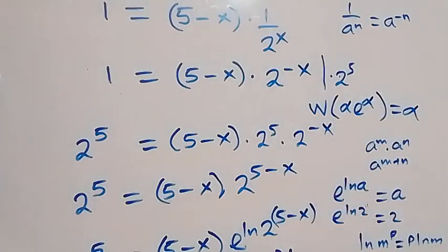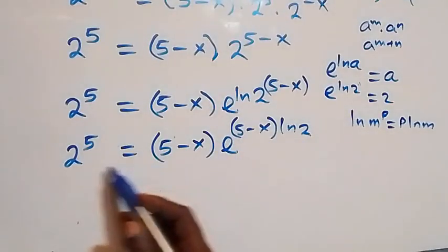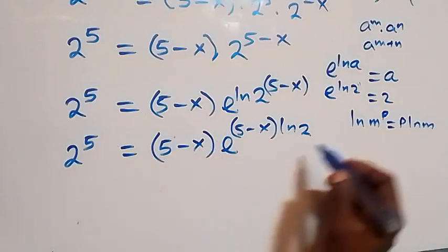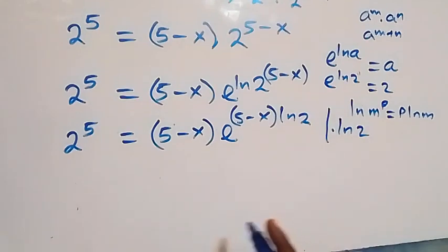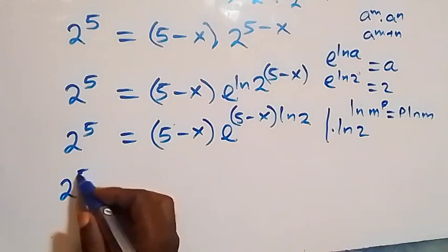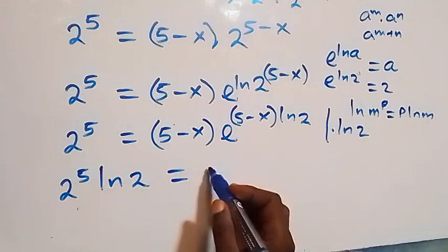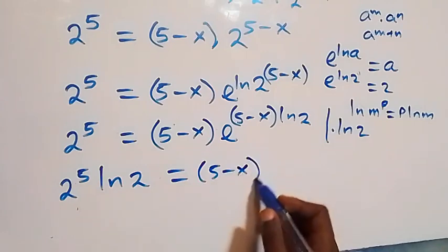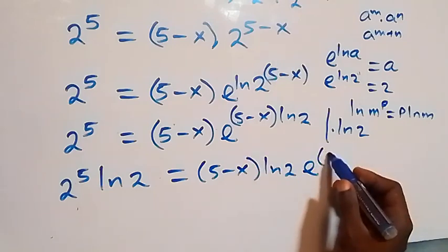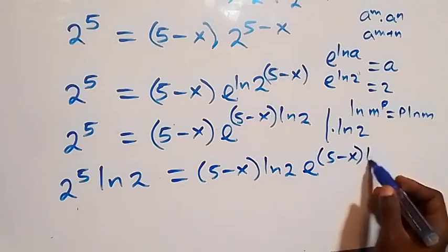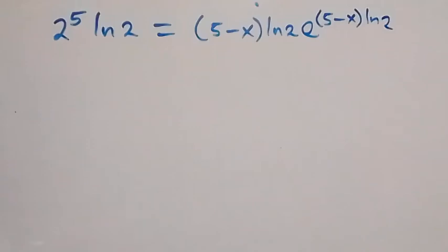Now, for the Lambert W function the power and the coefficient of the exponent should be equal. Here we need to multiply both sides by ln 2 to introduce ln 2 into the coefficient. So multiplying through by ln 2, the left side becomes 2 raised to power 5 times ln 2.